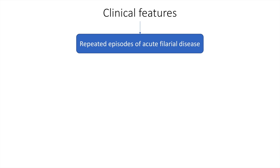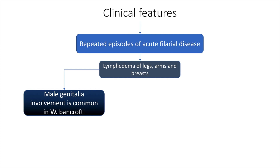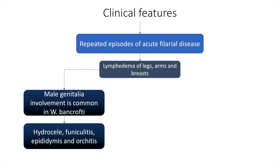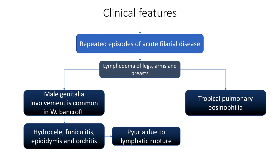Repeated episodes of acute filarial disease cause lymphedema of legs, breasts, and arms. Male genitalia involvement is common in Wuchereria bancrofti but uncommon in Mansonella. Hydrocele, funiculitis, epididymitis, and orchitis can occur. Eventually, chyluria due to lymphatic rupture may also occur, although this is rare. The patient may also have tropical pulmonary eosinophilia.